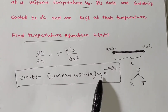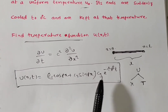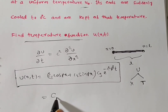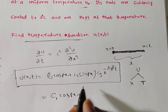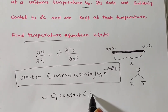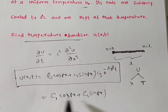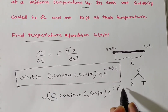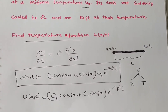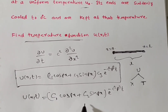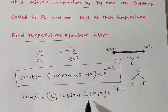Multiplying C₃ inside, we rename: C₁·C₃ as capital C₁ and C₂·C₃ as capital C₂. So the solution becomes U(X, T) = [C₁·cos(PX) + C₂·sin(PX)]·e^(−C²P²T). There are two arbitrary constants, C₁ and C₂, to be determined from the given conditions.